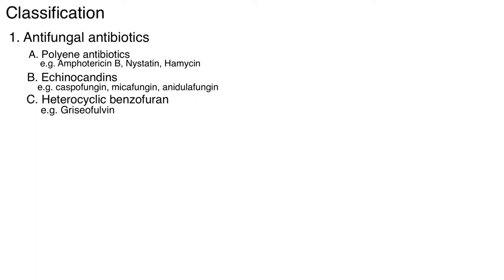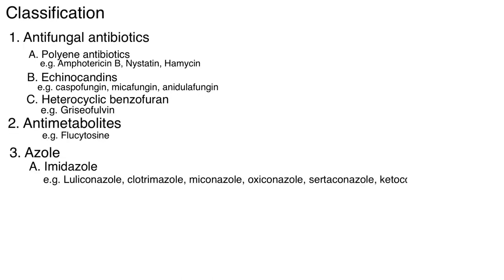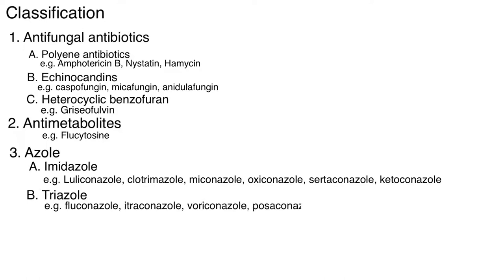The second classification is antimetabolites — example is flucytosine. Number three is azoles, subcategorized into two groups: A) Imidazoles — examples are luliconazole, clotrimazole, miconazole, oxyconazole, sertaconazole, and ketoconazole; B) Triazoles — examples are fluconazole, itraconazole, voriconazole, and posaconazole.